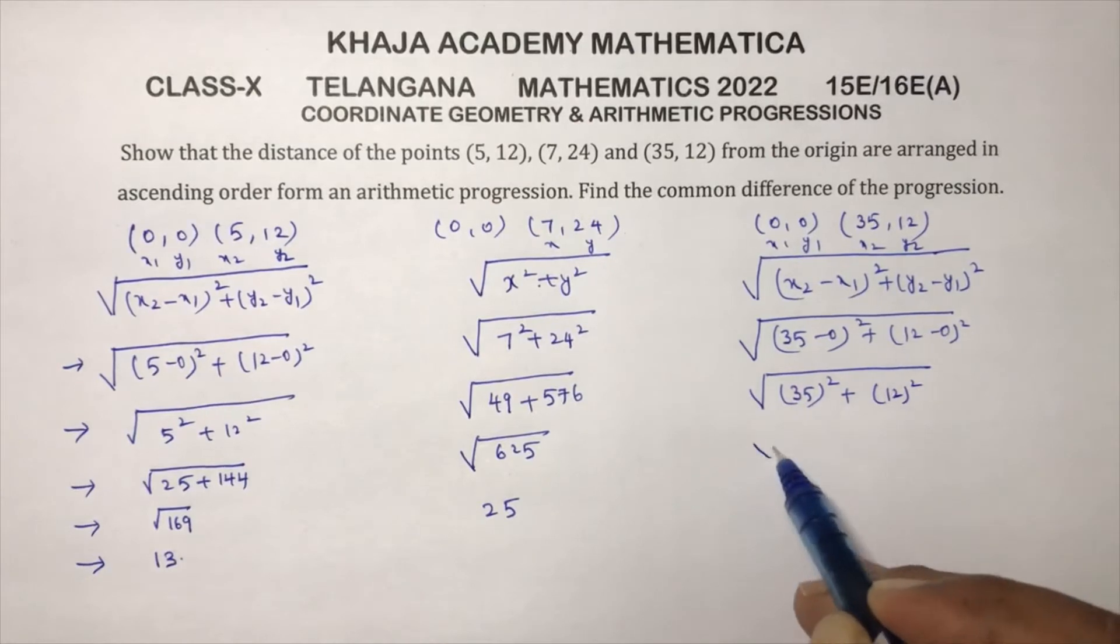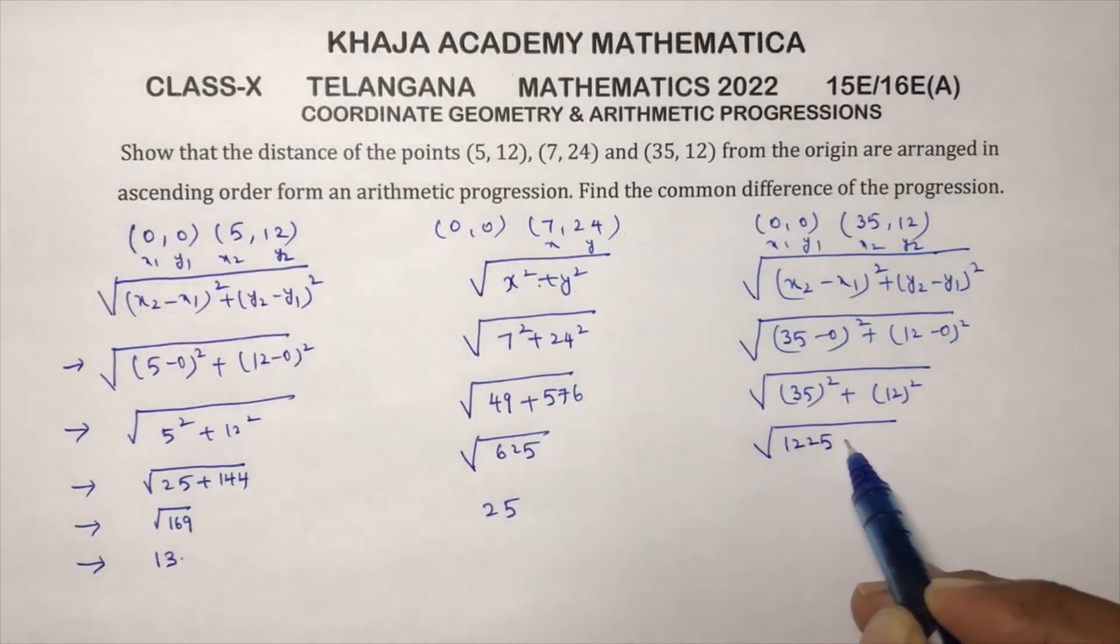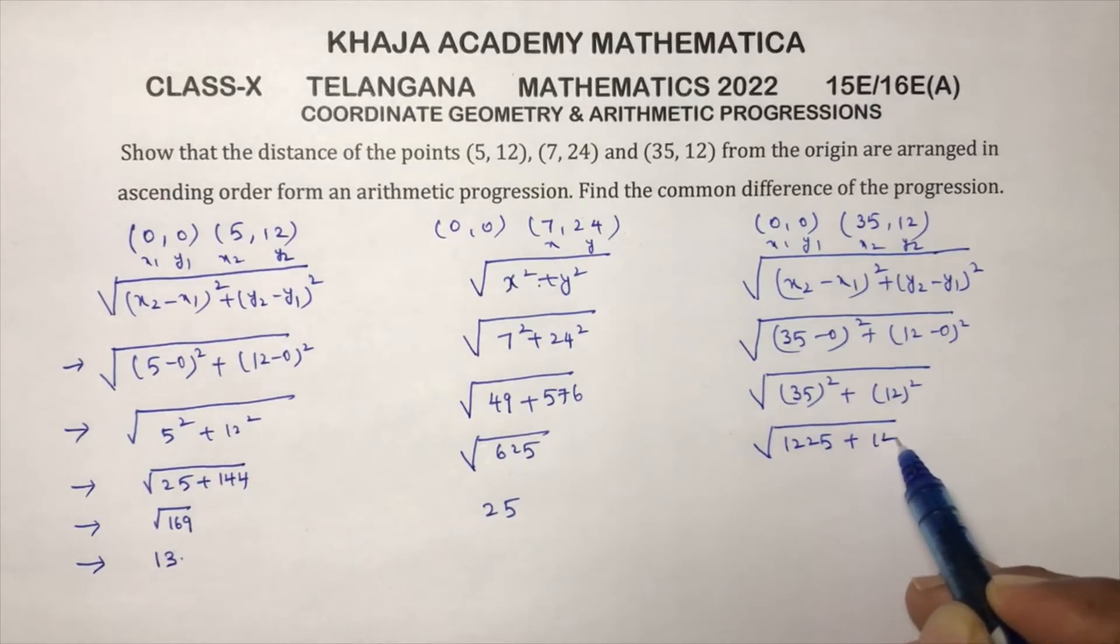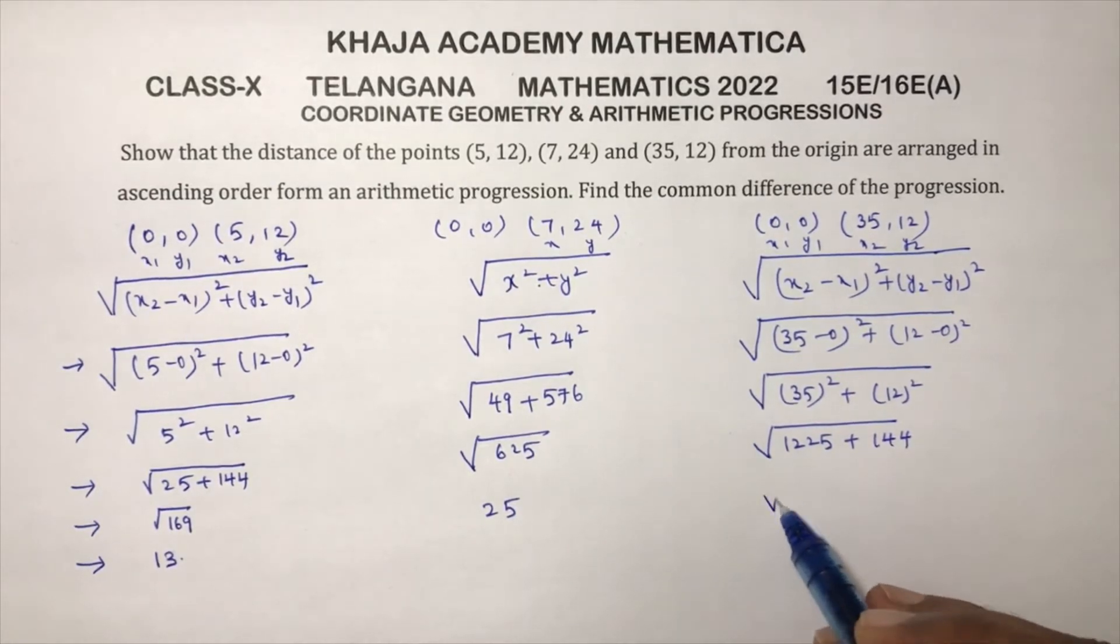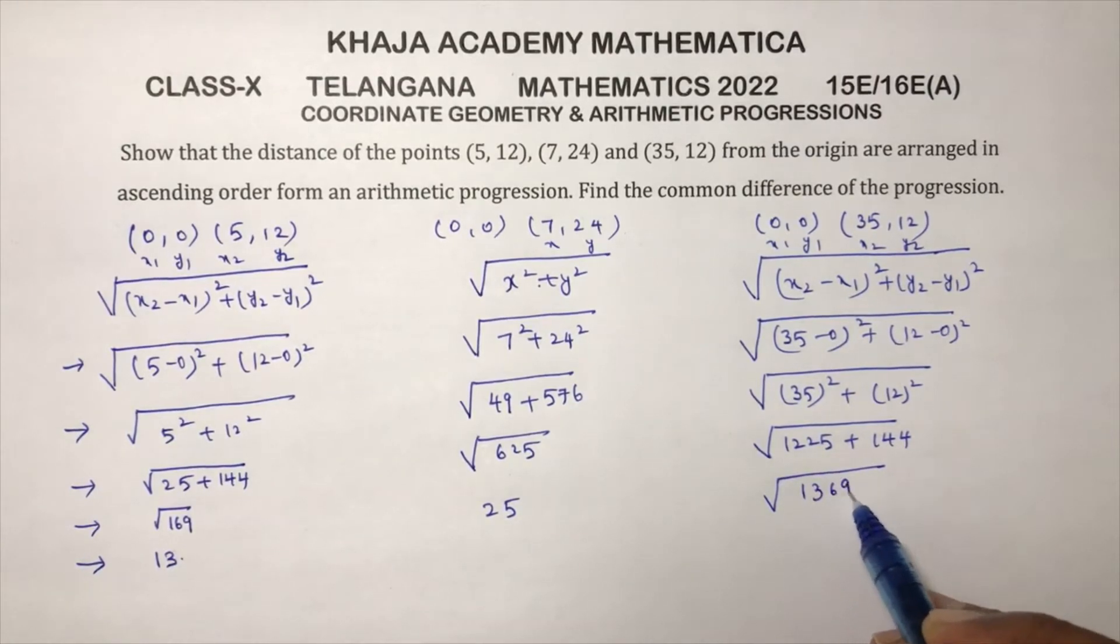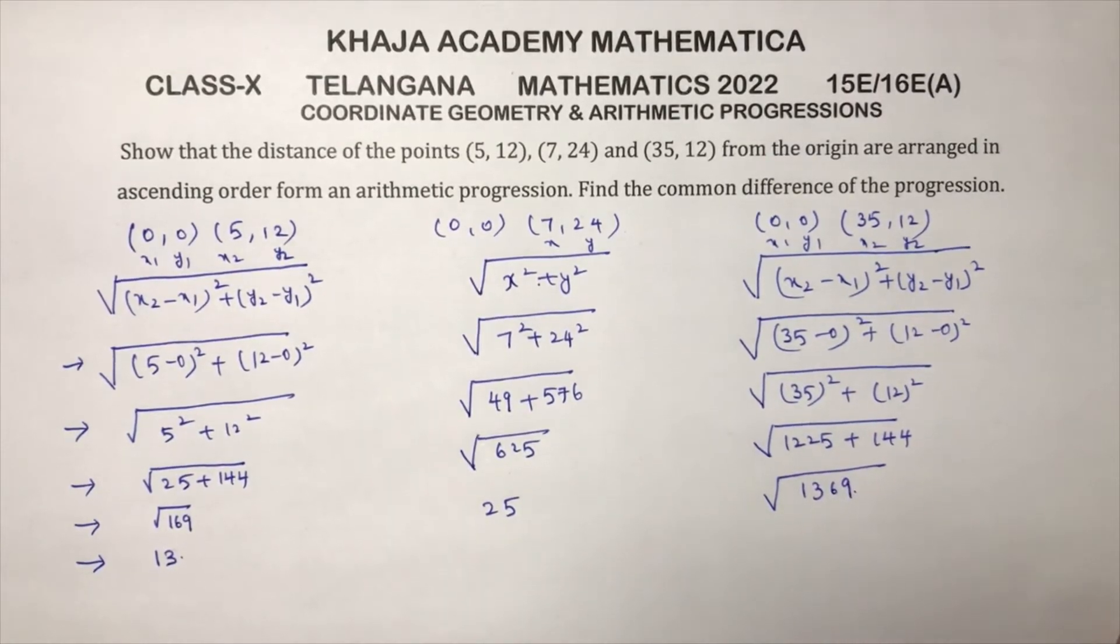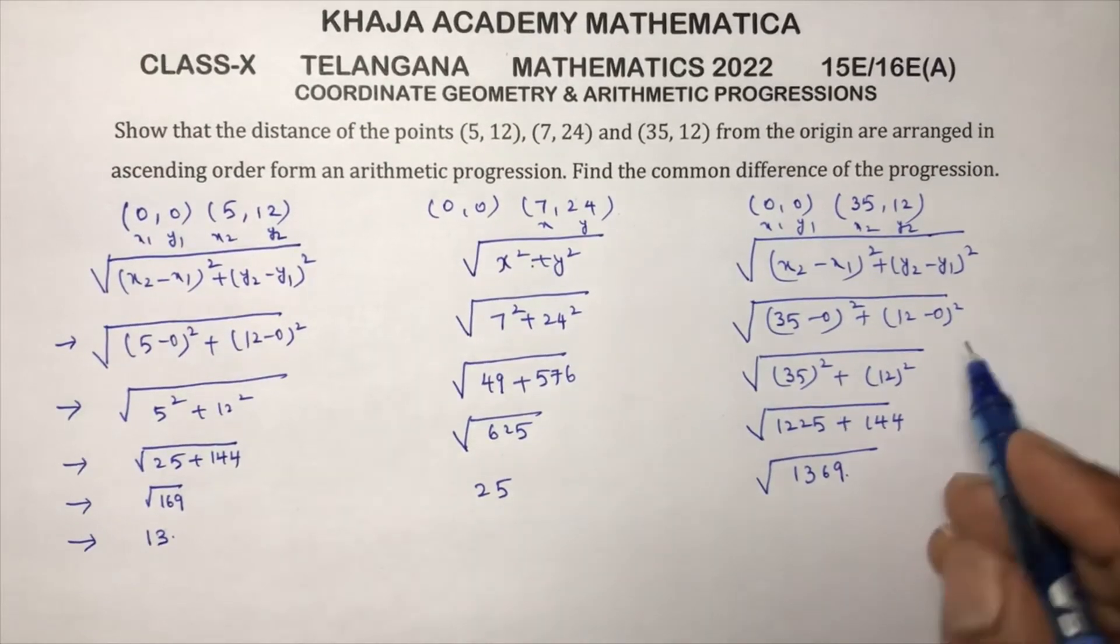So 35 square plus 12 square is 1225 plus 12 square is 144. So if you add this, you'll get 1369.